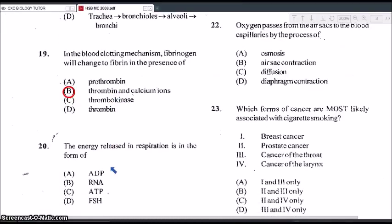And number 20. The energy released in respiration is in the form of... Is it A ADP, B RNA, C ATP, or D FSH? So that will have to be the ATP. So remember ATP is the storage molecule for energy. Adenosine triphosphate. The ADP now, that is adenosine diphosphate. So when ATP is broken down, that would produce the ADP and the inorganic phosphate. So the ATP stores the energy and releases it in respiration.